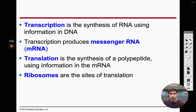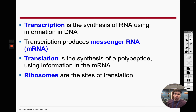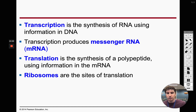Ribosomes — both on the rough ER and free-floating throughout the cell, as we covered in Chapter 4 — are where our proteins are made. That's where the second stage of gene expression, translation, is going to happen.